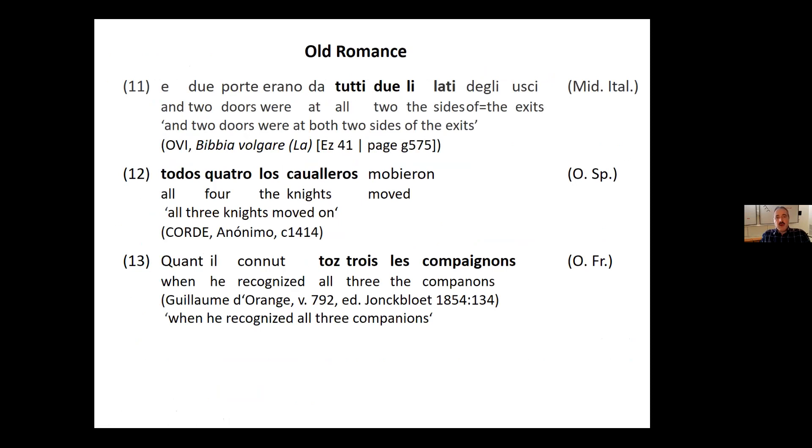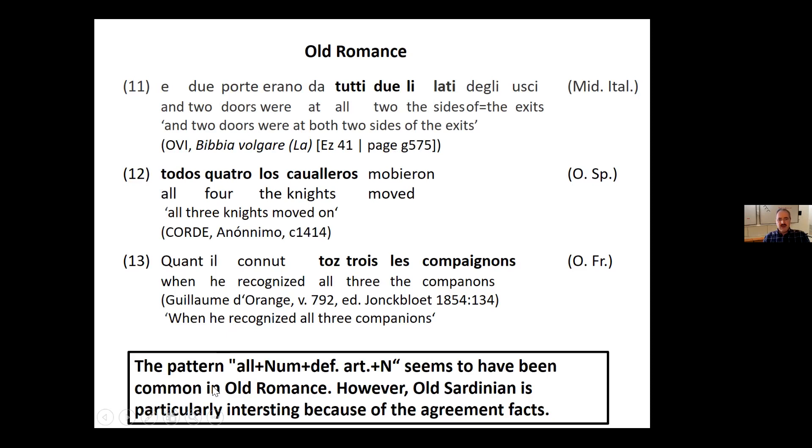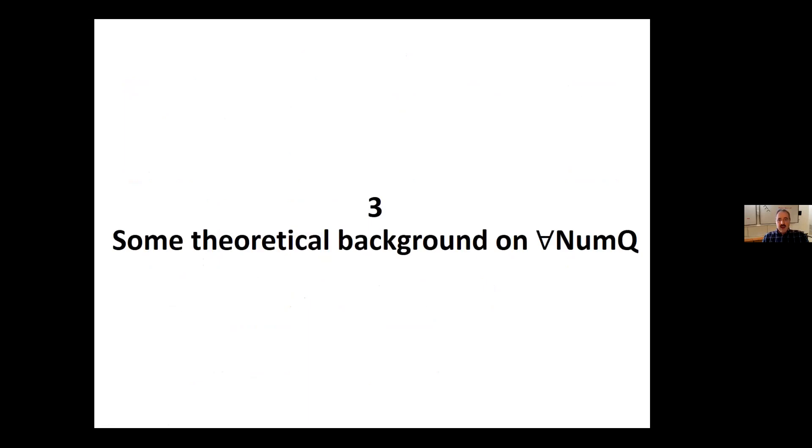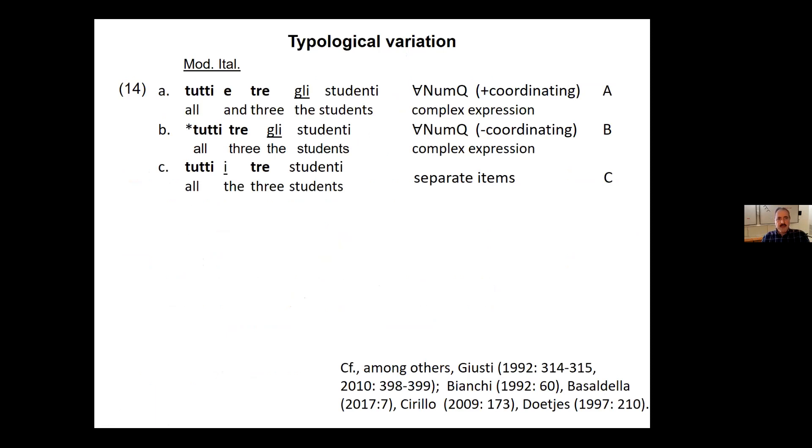Just to mention it, this seems to be a quite widespread word order in Old Romance, in contrast to Modern Romance with the article after the numeral and before the noun. However, Old Sardinian is particularly interesting because of the agreement facts, which we don't observe in the other Romance languages. Now, some theoretical background on universal numeric quantifiers, which is a name used by Cirillo 2009.